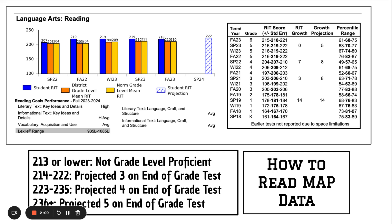If you look at the columns, you'll see spring 22, fall 22, winter 23, spring 23, and fall 23. So you can see how your child did — it looks like the last test of fourth grade, then all three fifth grade tests, and then the sixth grade test which is the fall 23.